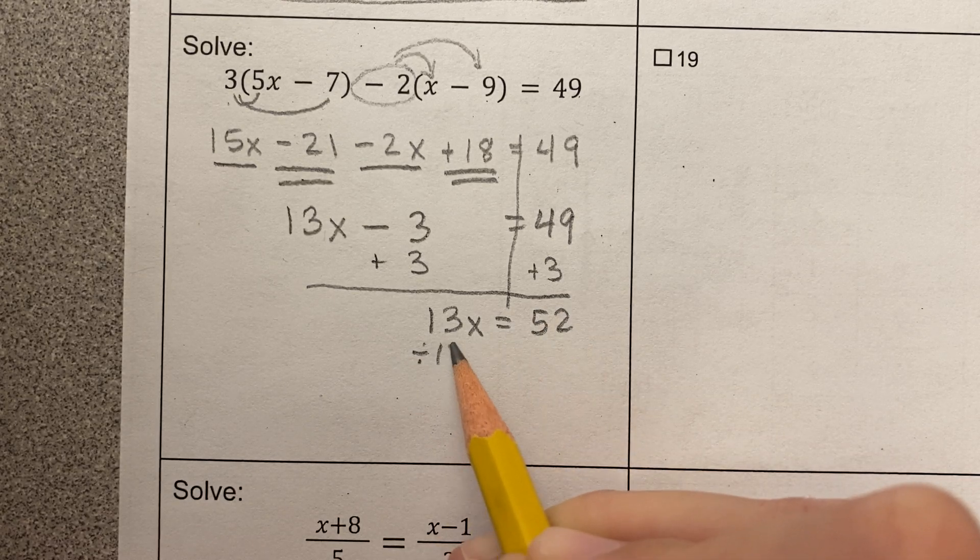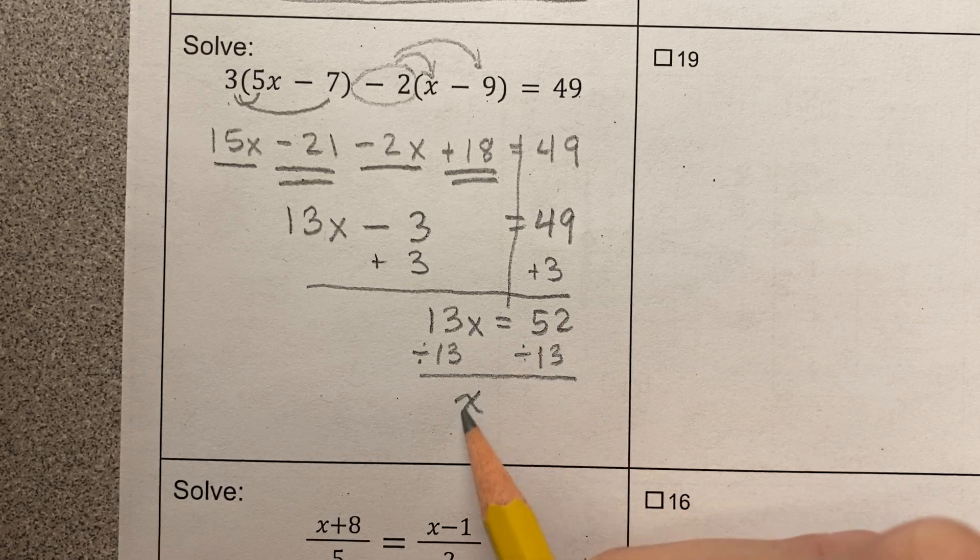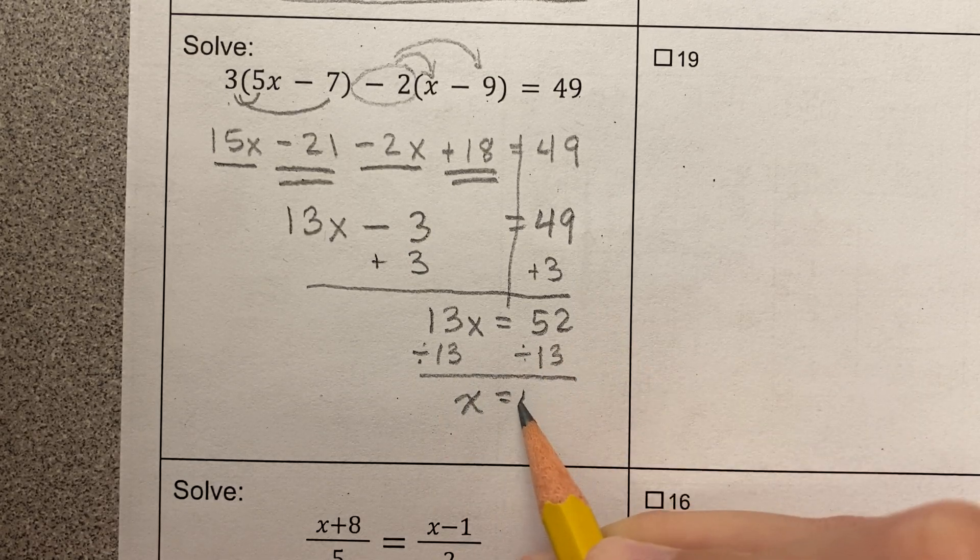x is being multiplied by 13, I'm going to divide by 13. Feel free to use your calculator on all of this. 52 divided by 13 is 4.